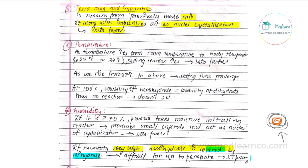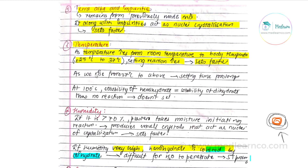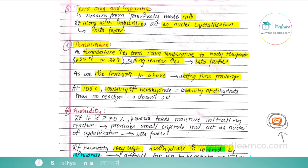Sixth factor is temperature. As temperature increases from room temperature to body temperature, approximately 25°C to 37°C, the setting reaction increases. If temperature rises from 37°C above, it begins to decrease the setting rate. At 100°C, the solubility of hemihydrate and dihydrate becomes equal, so the setting reaction stops.